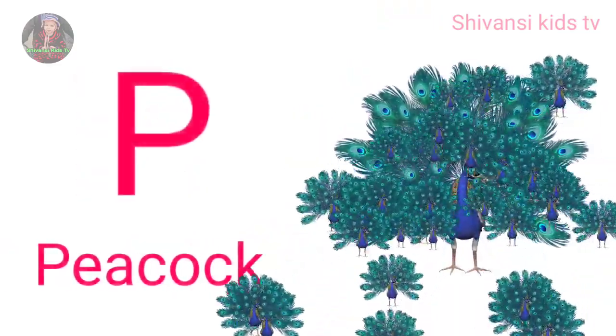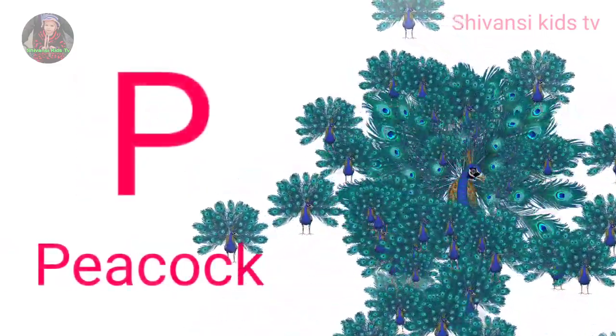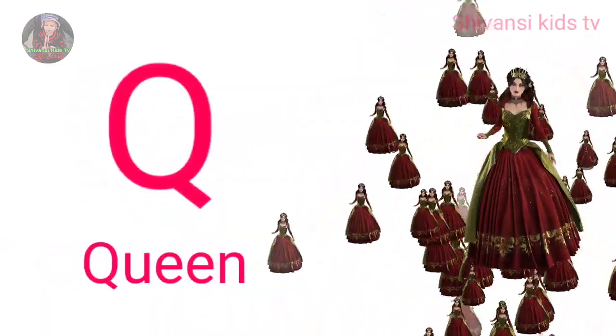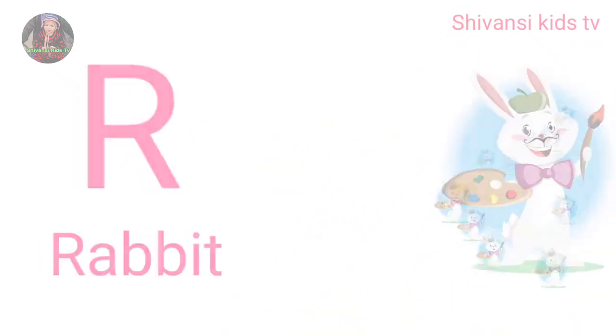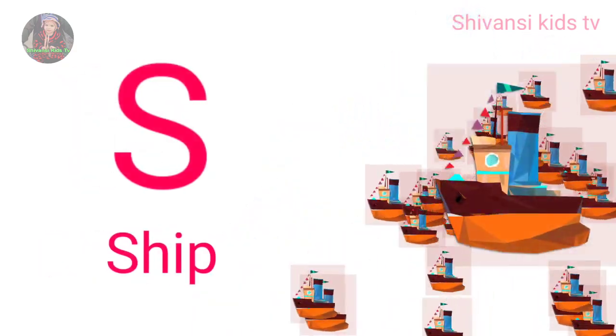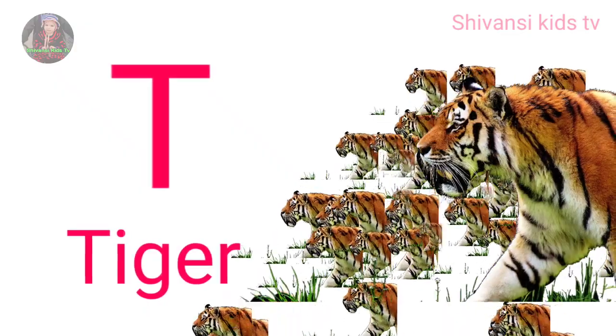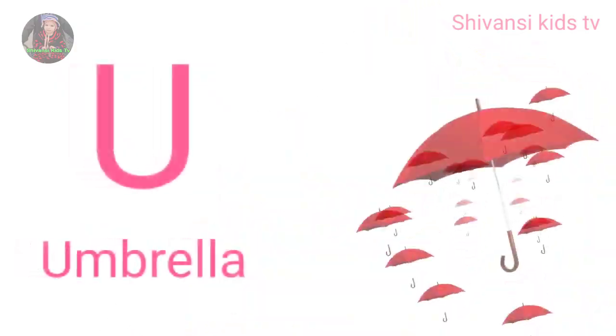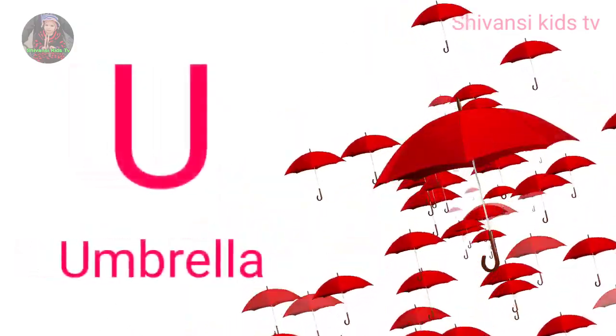P for peacock, Q for queen, R for rabbit, S for sheep, T for tiger, U for umbrella.